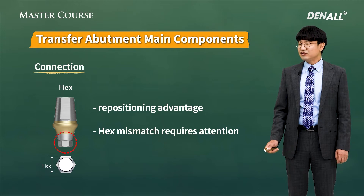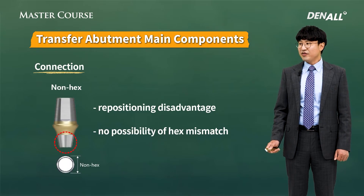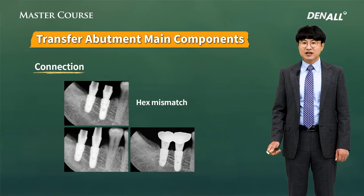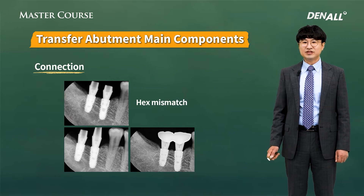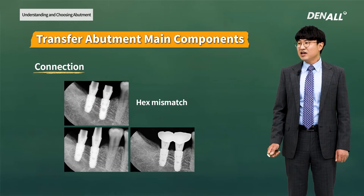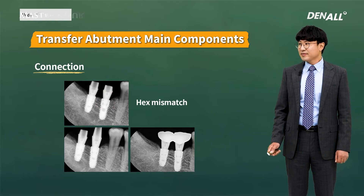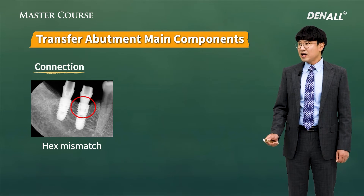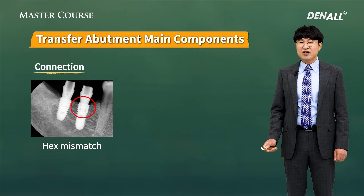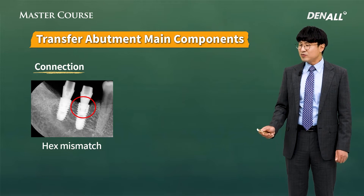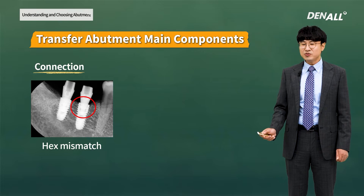Can you see the hex type with the shape of a hexagon? The disadvantage of the non-hex is that it cannot be repositioned, as there is no hex structure. The biggest problem in using the hex abutment is that hex mismatch can occur, which is the incorrect connection. A clinician can easily make a mistake, as the screw can still be tightened even with the mismatch. If you see a connection gap on the x-ray, there is a lot of space below the screw. If you get skilled in reading the x-ray, you will detect the hex mismatch easily.